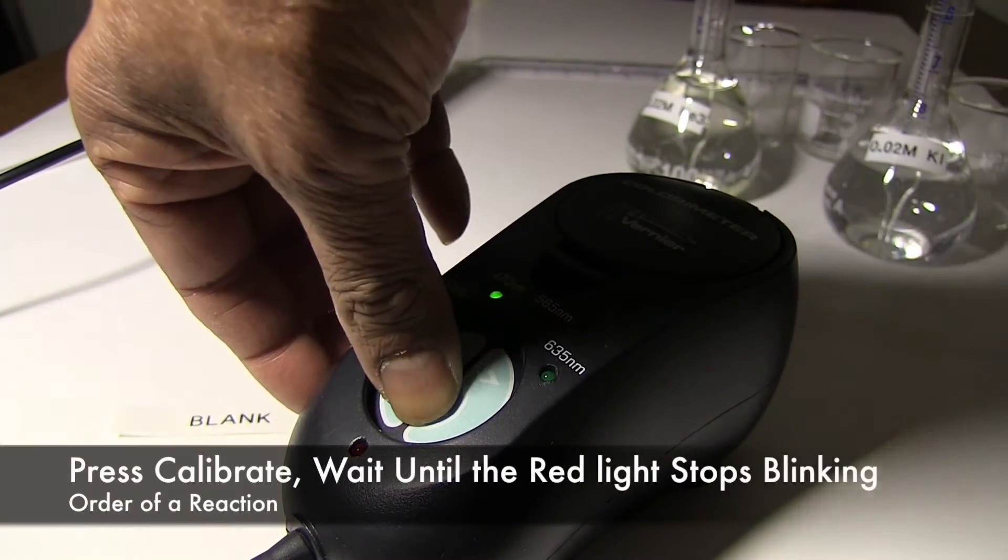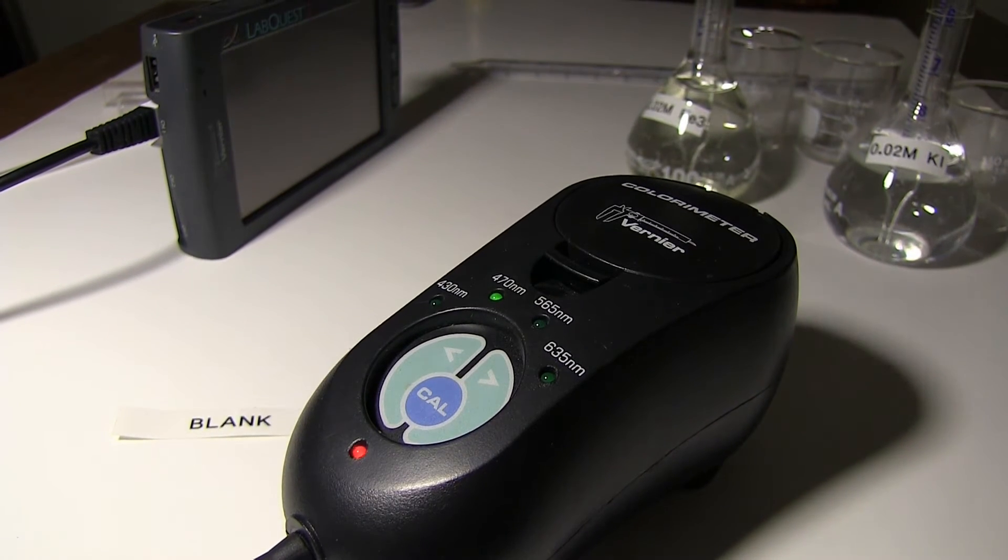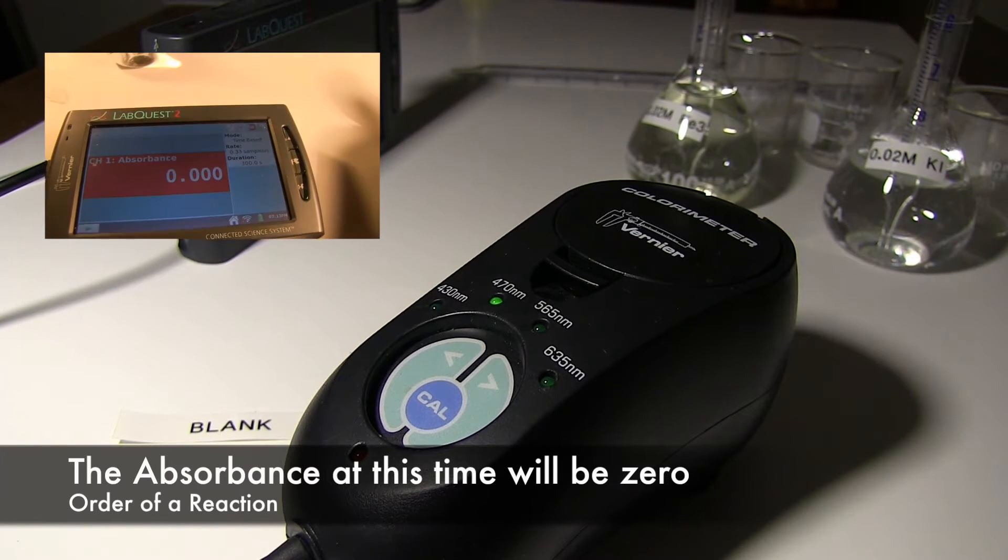Close the colorimeter, press calibrate, wait until the red light stops blinking. Now the colorimeter is calibrated and you can perform your experiment. After calibration, the reading on the LabQuest for absorbance will be 0.